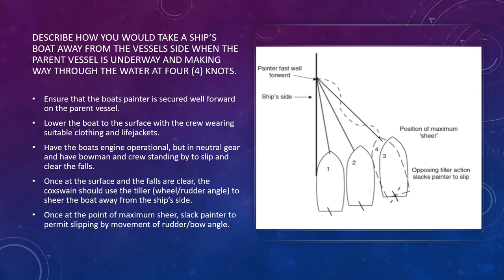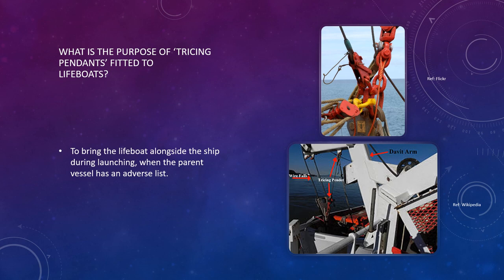Have the boat's engine operational but in neutral gear, and have the bowman and crew on standby to slip and clear the boat falls. Once at the surface and falls are clear, the coxswain uses the tiller — the wheel and rudder — to shear the boat away from the ship's side. Keep the painter attached until you reach maximum shear (positions three or four as shown in the picture), then use the quick release system to slip the painter once the boat has sheared clear of the parent vessel.